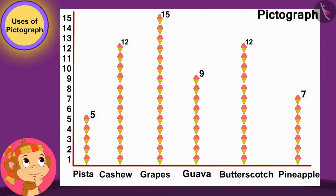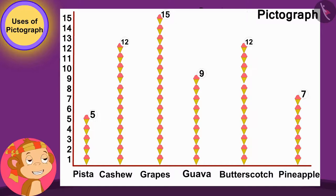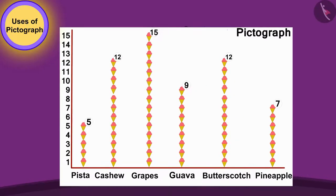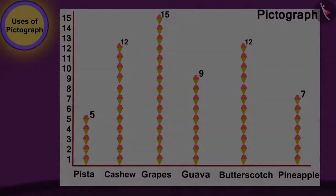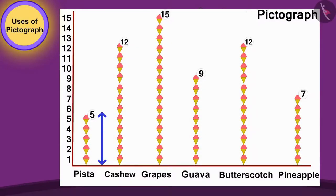Now, finally, Babban thought by looking at the pictograph, the number of people who like this ice cream is the least. Children, can you tell which ice cream is liked by the least number of people? The line of Pista ice cream is the smallest in height. Therefore, the number of people who like Pista ice cream is the least.